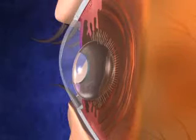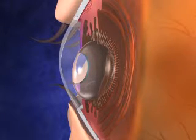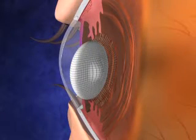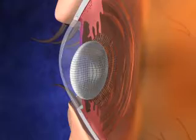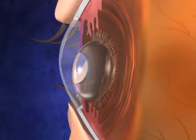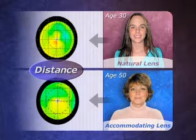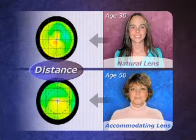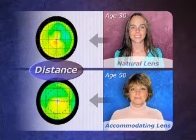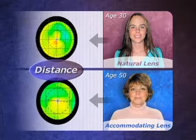They both move anteriorly and flex or arch to increase their focusing power in the intermediate and near ranges. Now let's compare the wavefront maps for the natural lens with those for the crystal lens. Let's start with the wavefronts for distance vision. In this example, both women are watching TV. The wavefronts are quite similar — they are both all green, which means normal distance vision.